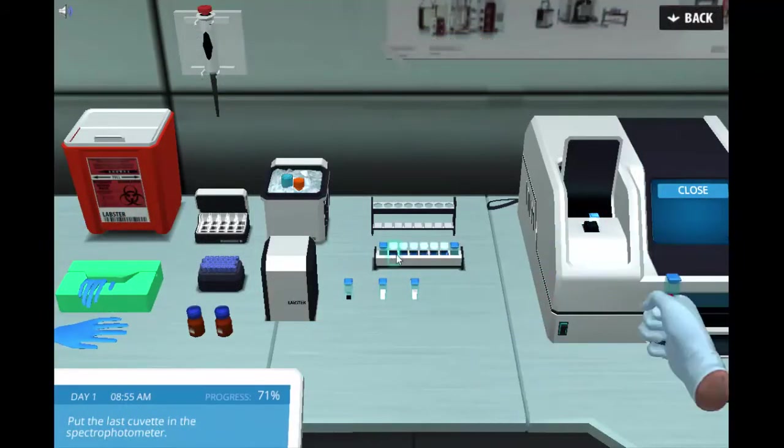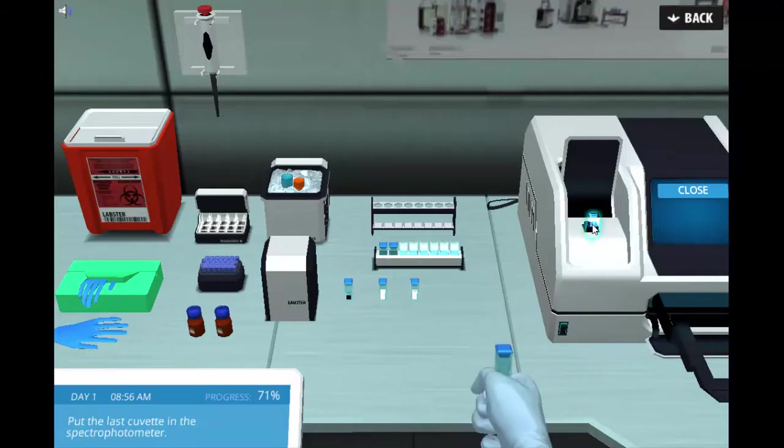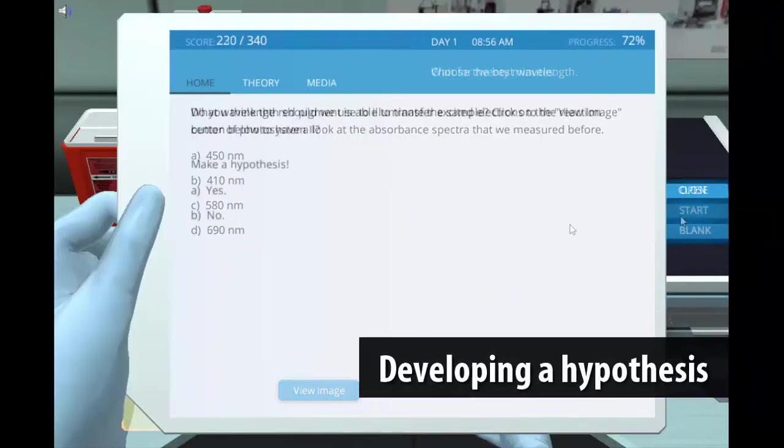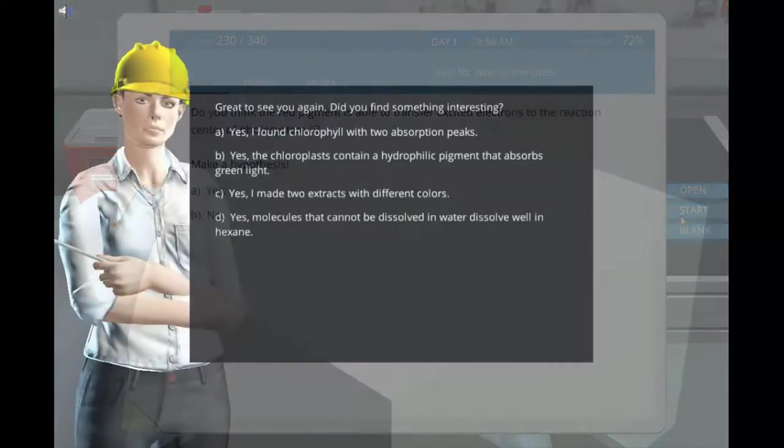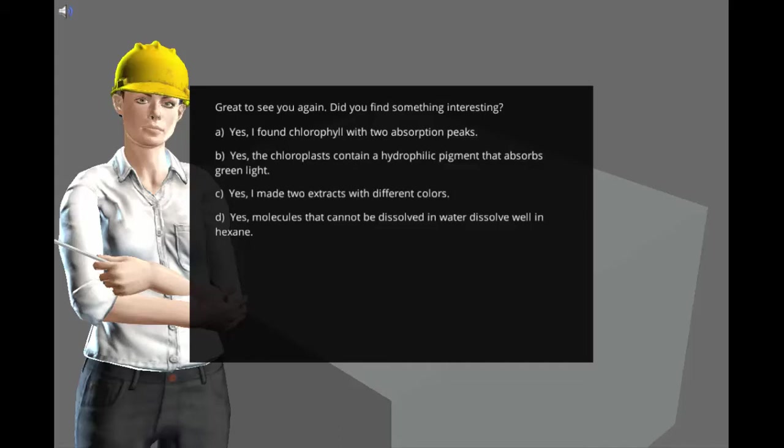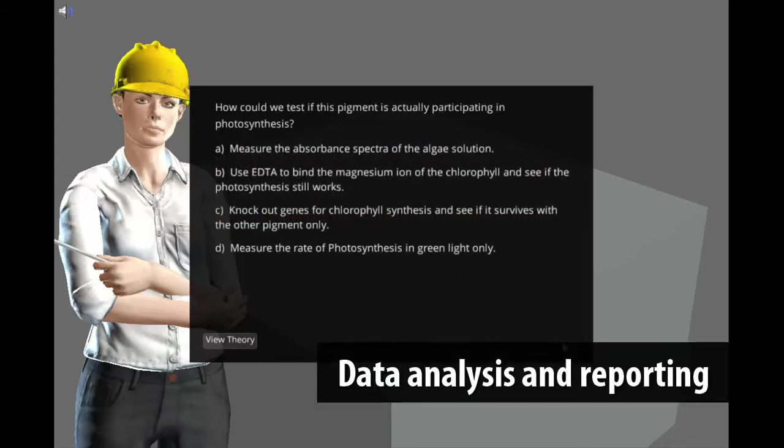Apart from the theory about photosynthesis and practical knowledge of lab practices, students have to develop a hypothesis and test it by making choices regarding the experimental procedure. They will also learn the importance of experimental controls and have to analyze and report their results.